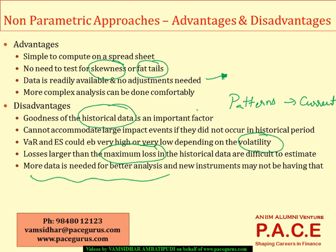This chapter has focused primarily on non-parametric approaches for computing value at risk, and how we can improve the calculations using weightings based on age, volatility, correlation, or combinations of volatility with historical simulation and bootstrap historical simulation. It is better to practice by taking some data, making the adjustments, and computing the value at risk. For further queries, you can get in touch by calling 98480-12123 or emailing vamsithar@pacegurus.com. Thanks a lot for listening to this session.